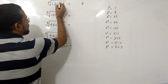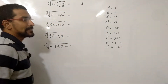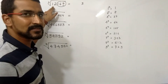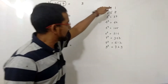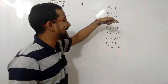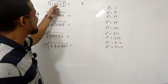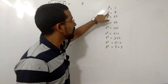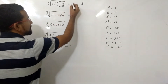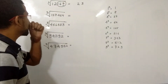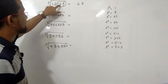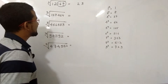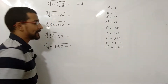Now we will leave out the last 3 digits and see the remaining digits. The remaining is 12. We check if there is any cube equal to 12 — no — but we see any value less than 12. Yes, there is 8, and 8 is the cube of 2, so its tens place value will be 2. So the cube root of 12167 is 23.